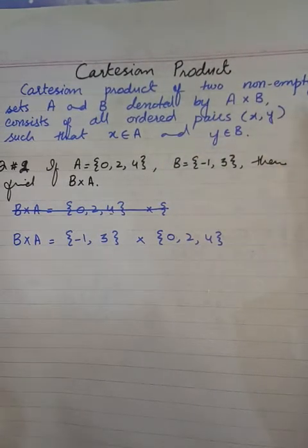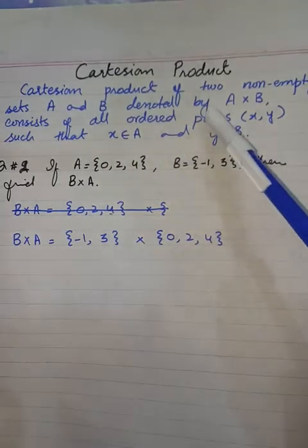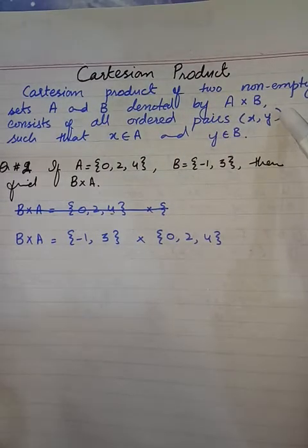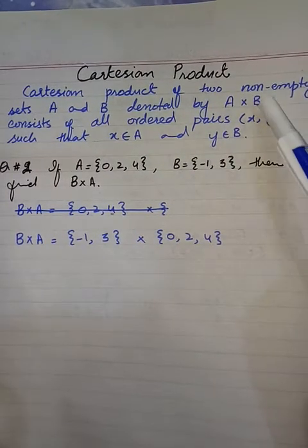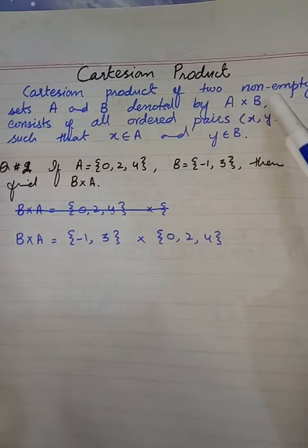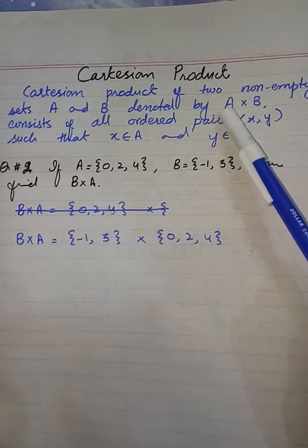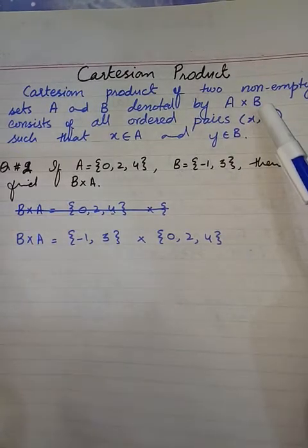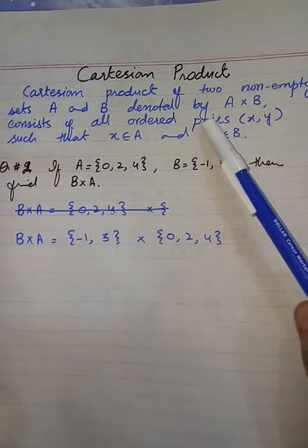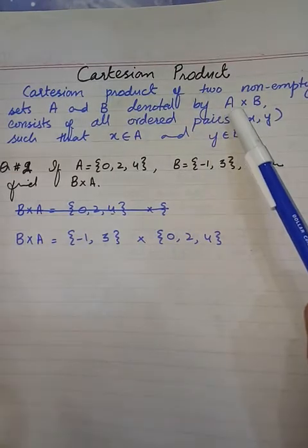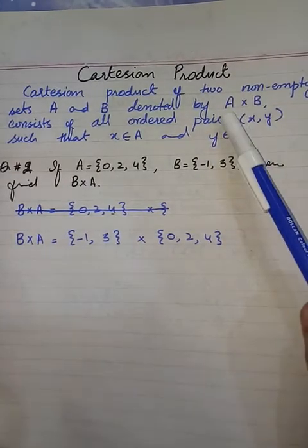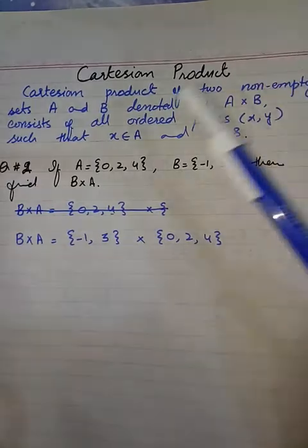Cartesian product of two non-empty sets A and B denoted by A multiply B. Again, order in multiplication is also important. If you have to multiply B multiply A, then you have to write B at first place and then A at the second place. Now if we have to multiply A first, A multiply B, then we have to write A at the first place and B at the second place.